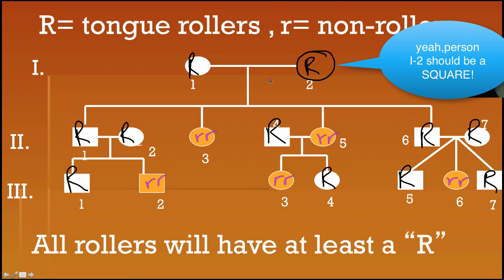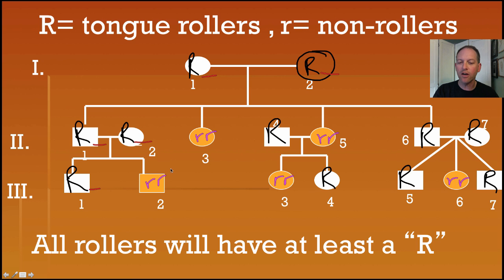Our next job, then, is to try to see if we can figure out what the second letter is for each of these big R's. Let's start with the people in this first generation. Person 1-1 and 1-2. We know that they had a child here with two little r's. Well, that didn't just come out of nowhere. That means that one parent had to be carrying one little r, and one other parent had to be carrying the other r. That means both parents are carrying the little r.